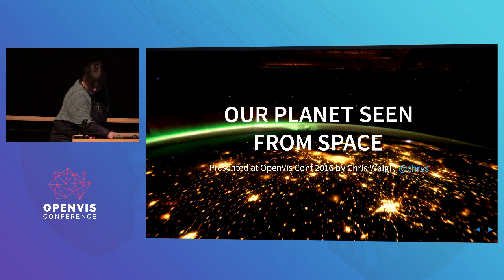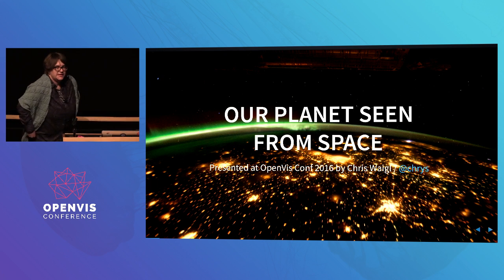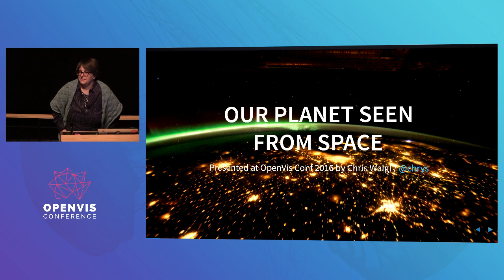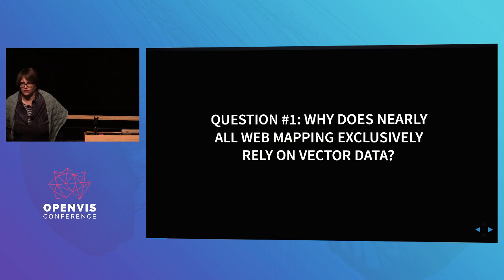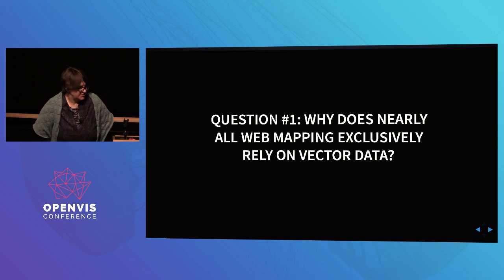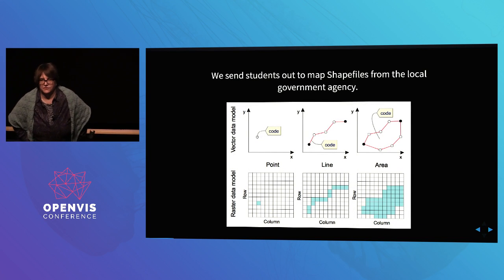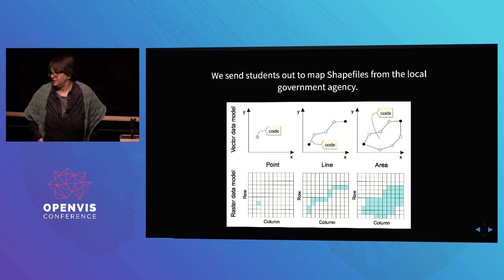There was not very much 'seen from space' in the title slide earlier, so I put in a space photo. This is from the International Space Station showing the aurora borealis, the green northern light we have a lot of in winter where I live. The premise of my talk is a really simple question: there is so much web mapping, but hardly anybody uses raster imagery - satellite imagery - even though there is a lot of it. We send students out to get GIS vector data from local government and put it on a map, but we very rarely give them satellite imagery and say, do something with it.